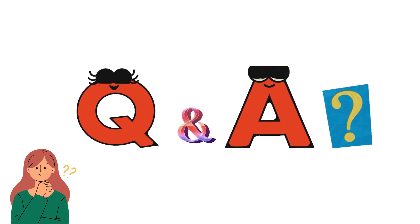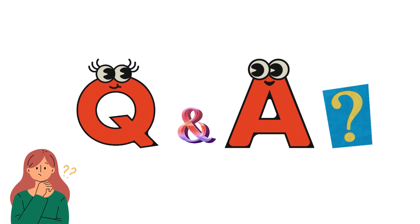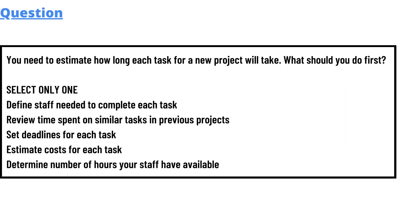Today's question is: you need to estimate how long each task for a new project will take — what should you do first? We have five options: A) define staff needed to complete each task, B) review time spent on similar tasks in previous projects, C) set deadlines for each task, D) estimate cost for each task, E) determine number of hours your staff are available.